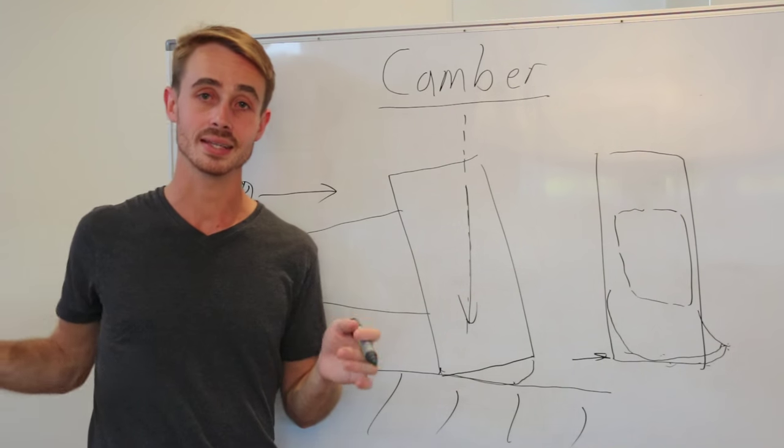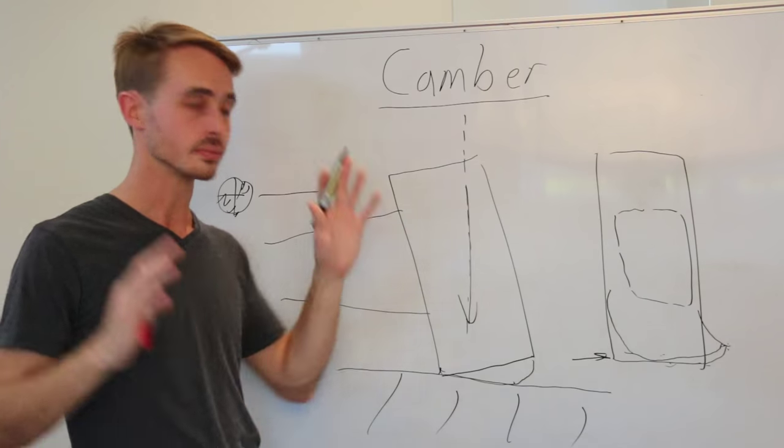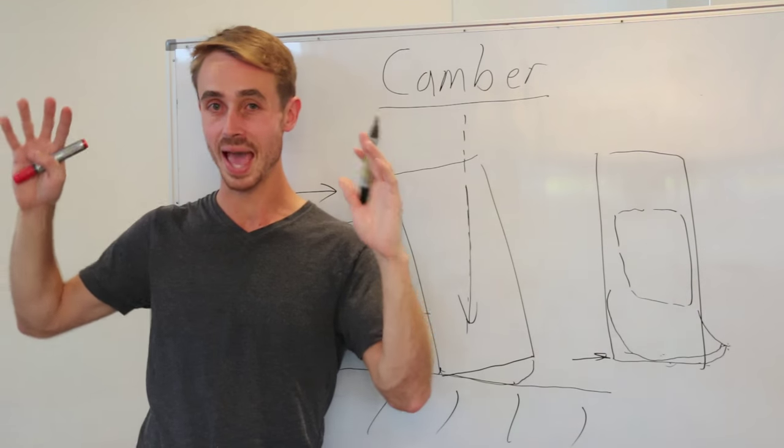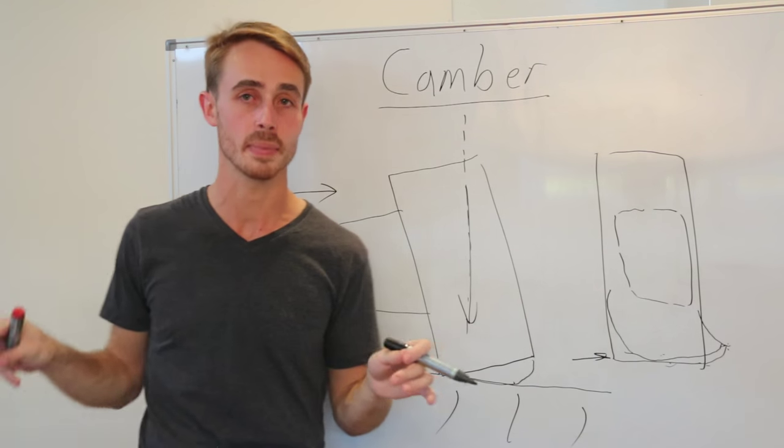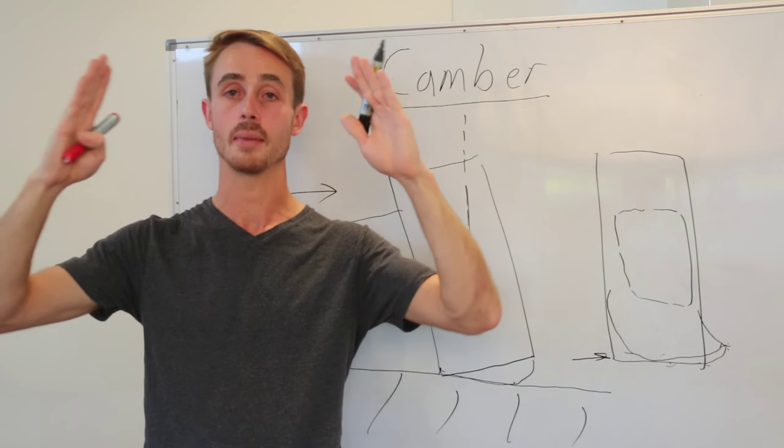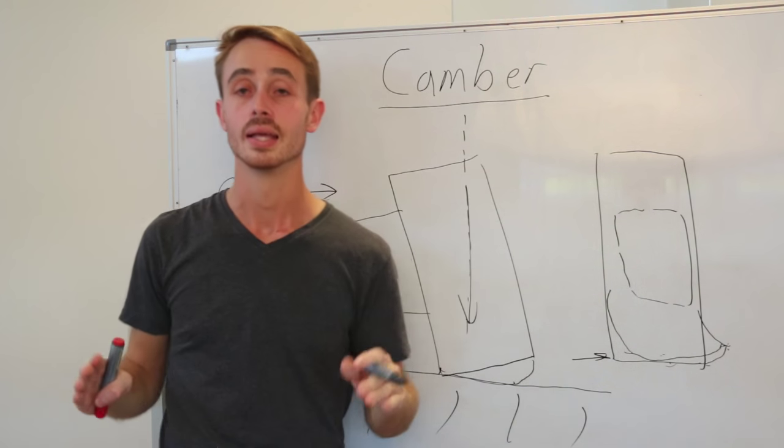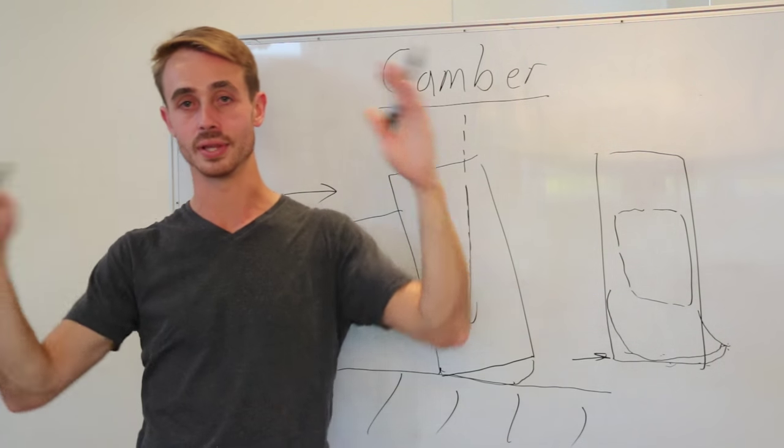In addition to this, the outside tyre is going to deform less because there's less load on it. So it's not going to be as bad. And of course, the contact patch requirement isn't going to be as severe. So that's why we get away with running camber on both tyres facing that way, negative camber, instead of trying to get them to both lean into a corner.